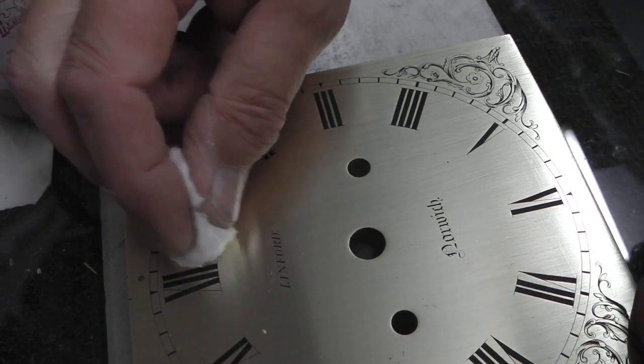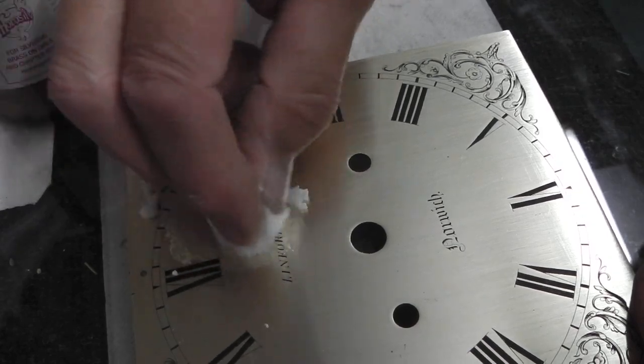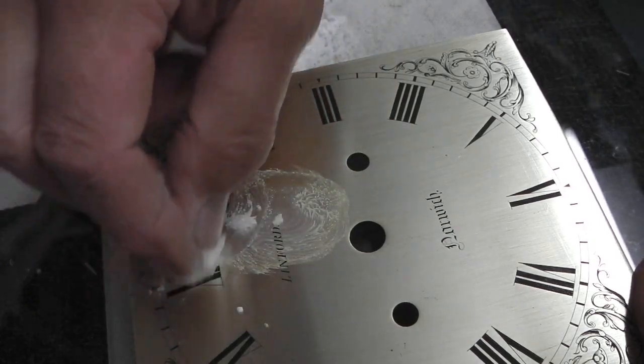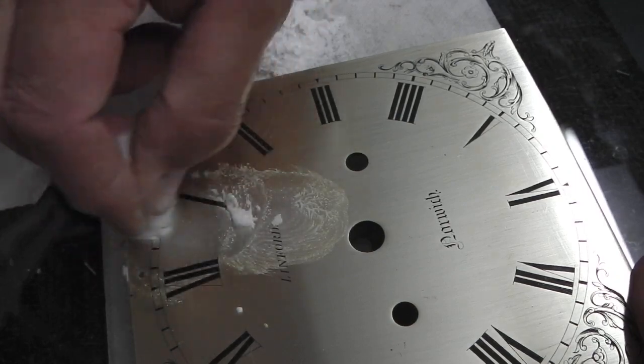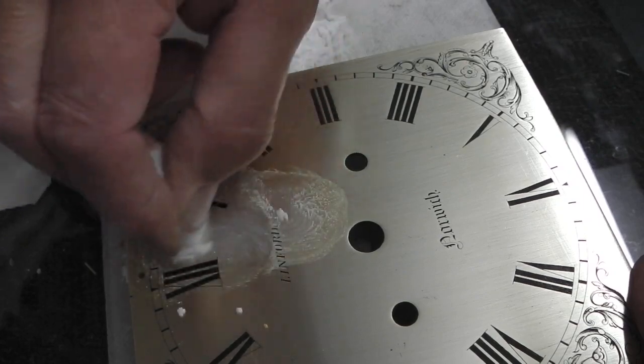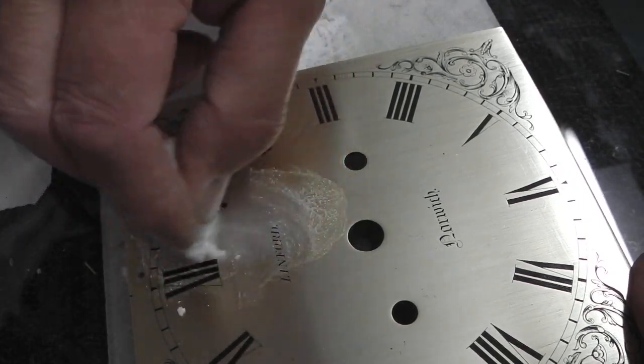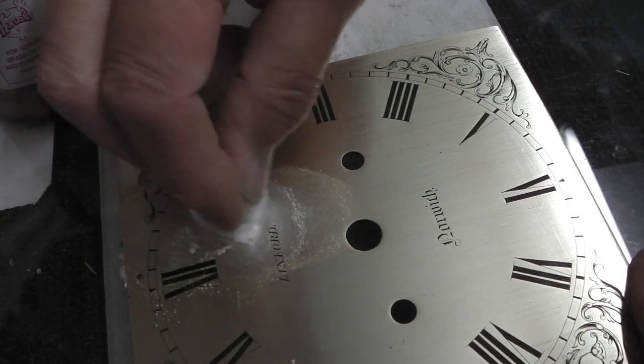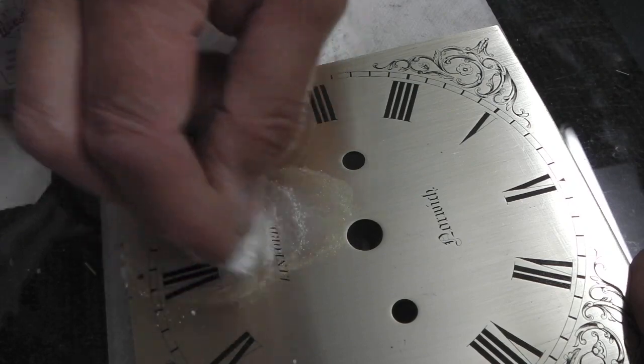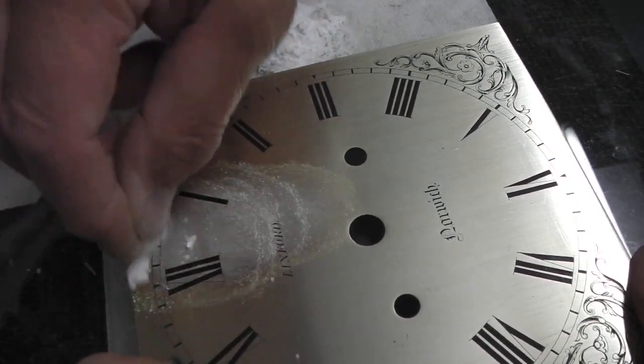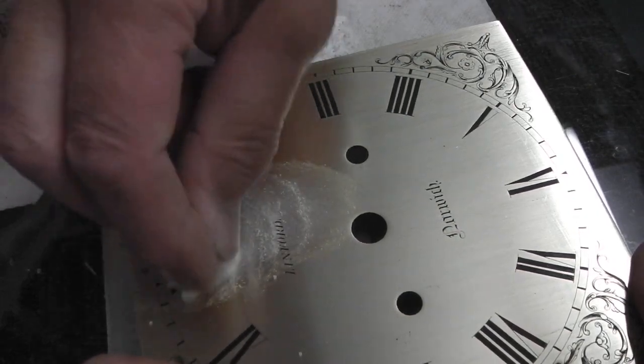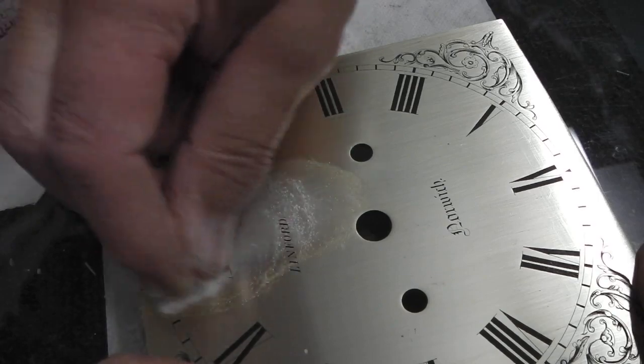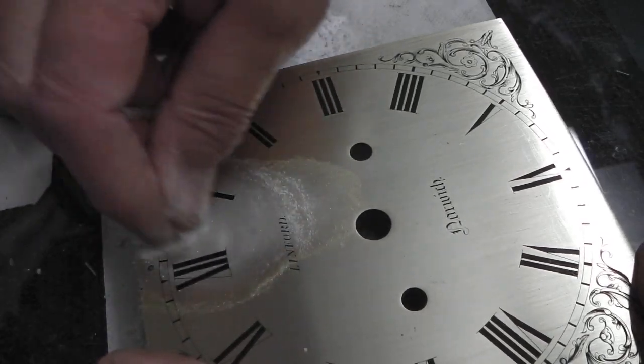And I take some of the silvering powder and we start in a circular motion, working it onto the surface of the dial. It takes a little while for a kind of creamy consistency to set up. Once it starts going, you can actually see it depositing the silver. It looks more white than silver at this stage.